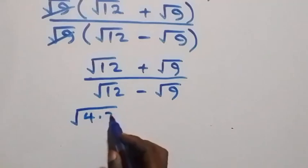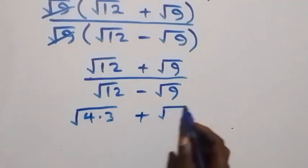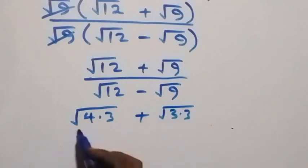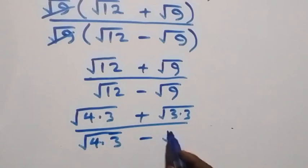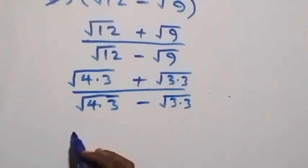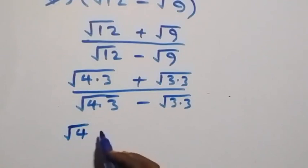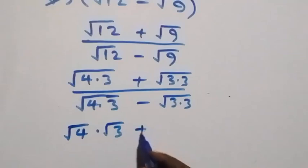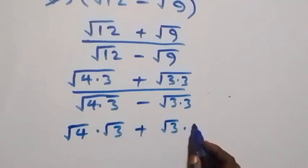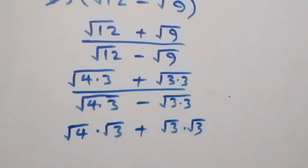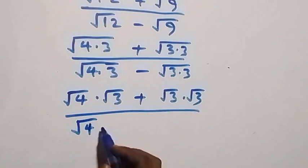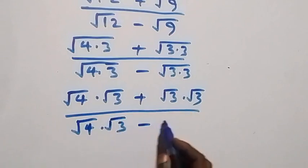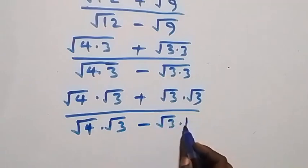We can equally write this as root(4 × 3) plus root(3 × 3), then over root(4 × 3) minus root(3 × 3). When we separate this, this gives us root(4) times root(3) plus root(3) times root(3), then divided by root(4) times root(3) minus root(3) times root(3).